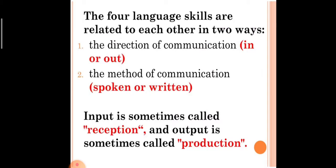The four language skills are related to each other in two ways. Number one: the direction of communication — in or out. Number two: the method of communication, whether spoken or written. The method of communication — whether it is public speaking or writing an article — is very essential.